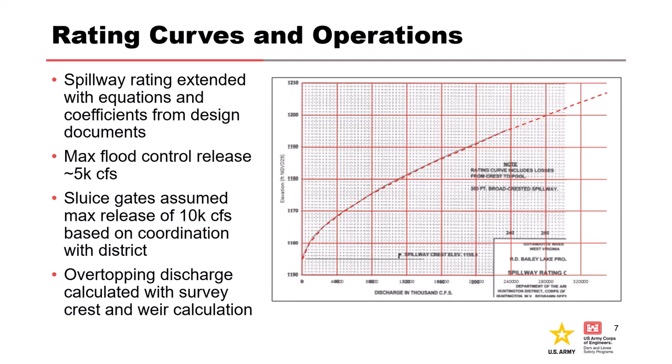The sluice gates assumed max release of 10,000 CFS based on coordination with the district. It's always worth coordinating with project operators to best understand how your project's going to operate. We used a crest survey and an HEC RAS 1D steady flow model to better quantify overtopping discharge on the dam crest. A little more work if we have a survey, we can plot the actual crest elevations and do a weir calculation in a program like RAS.